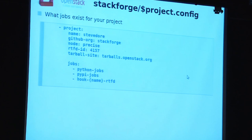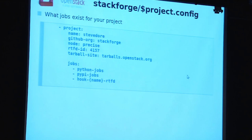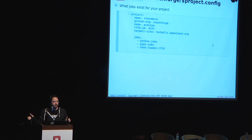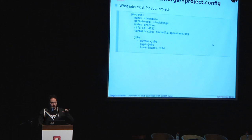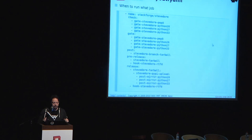You need: the name of the project, the GitHub org field (just put 'stackforge'), what type of node you want to run these on (just leave it as 'precise'), and if you have an RTFD account for your project, put in the ID so you can trigger documentation builds. Then there are collections of jobs: Python jobs is a set of jobs you can have; PyPI jobs publish your code to PyPI; and there's a hook job to trigger RTFD. You then need to configure Zuul to run those jobs, because just them existing isn't meaningful if nothing tells them to run.